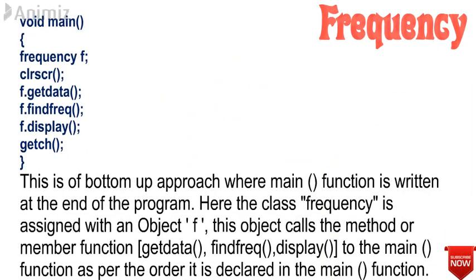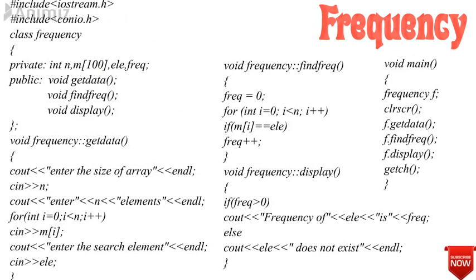Finally, in the void main function, the class 'frequency' is given an object f. f.getData() asks the user to enter all values. f.findFreq() checks how many times the search element has been repeated. f.display() displays the result — whether any frequency was found or not — and the complete program would look something like this.